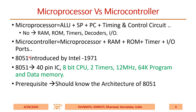The 8051 was introduced by Intel in 1971. It has 40 pins, an 8-bit CPU, 2 timers, runs at 12 MHz, and supports 64K program memory as well as 64K data memory.